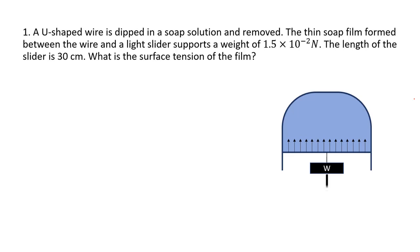This pulling is balanced by having a weight hung from the slider. At this position, the complete system is in equilibrium — that is, the weight equals the surface tension which pulls up the film. We are asked to find the surface tension of the film. The weight is given as 1.5 × 10⁻² Newton. The length of the slider is 30 cm, that is 30 × 10⁻² meter.